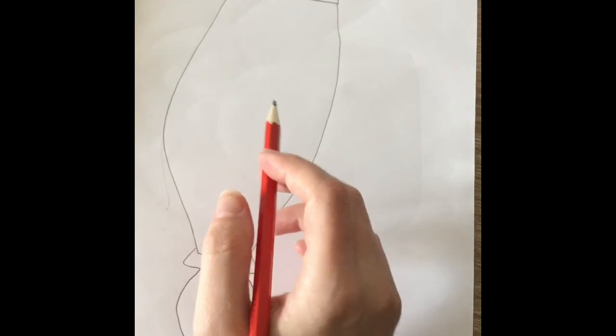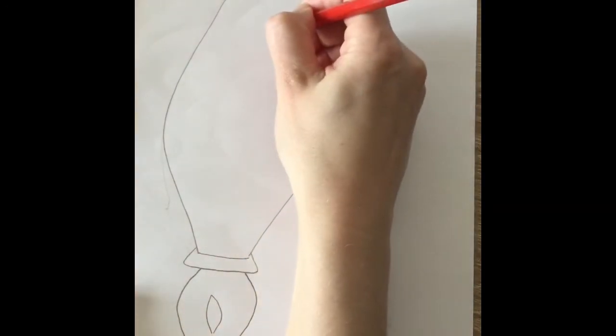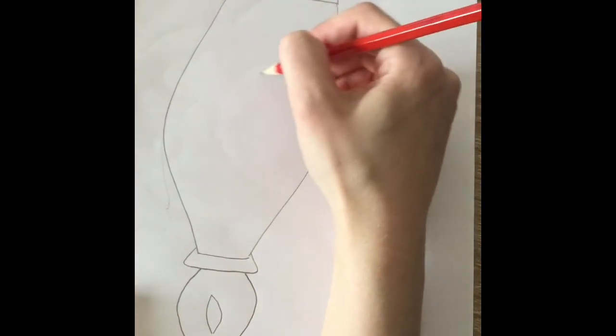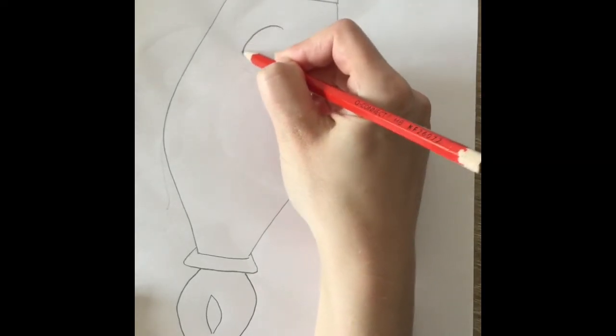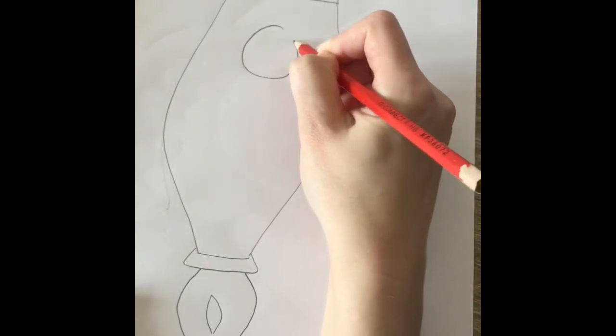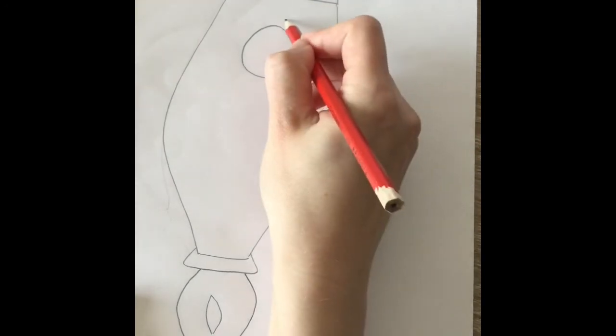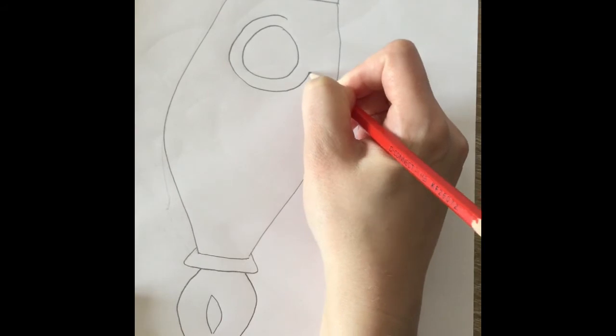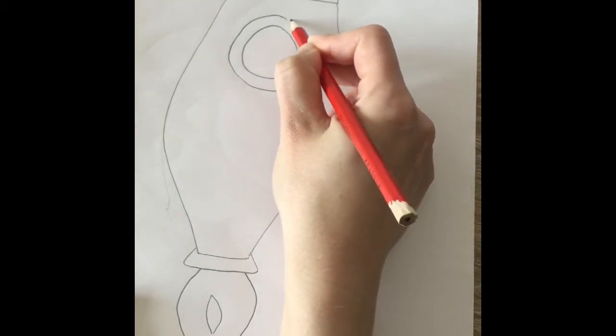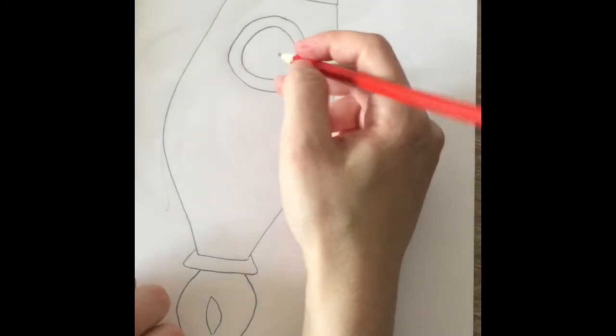Now for the rest of my rocket ship, I'm going to draw the window, which is going to be a circle. So I'm going to draw up near the top here. I'm going to draw a circle like that, and then I'm going to draw another circle around that circle. So I have two circles together like that. So that's going to be the window.